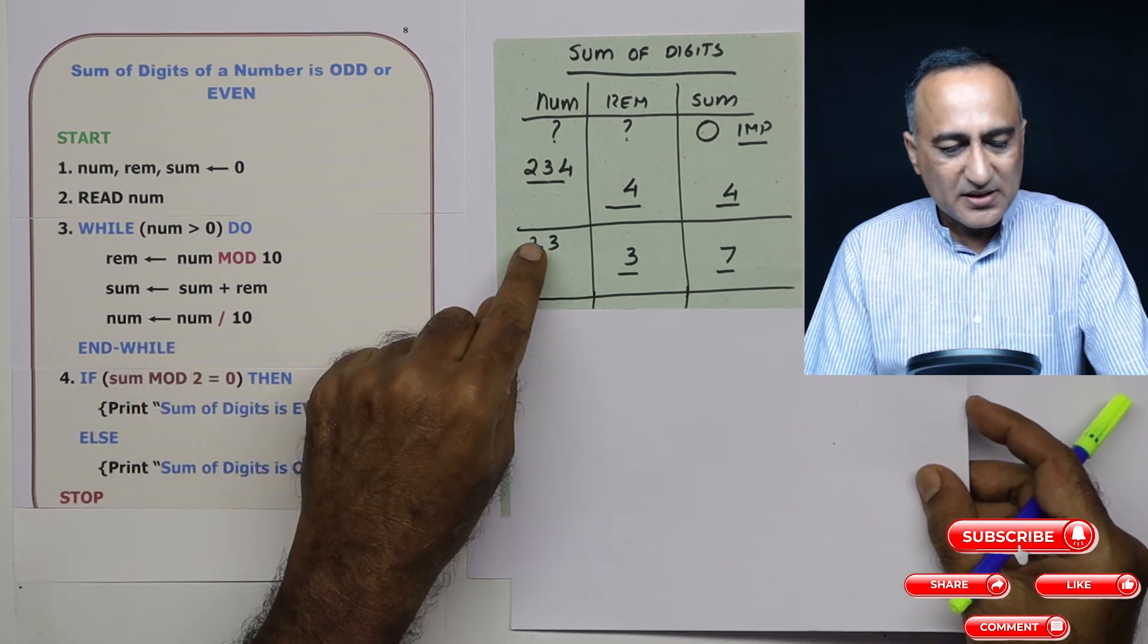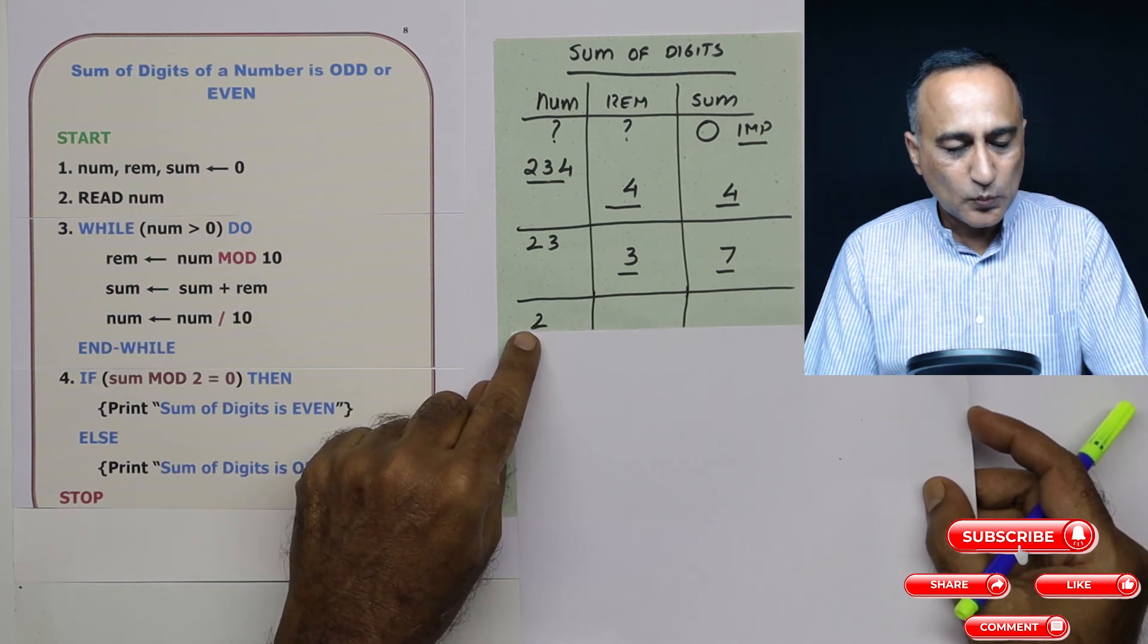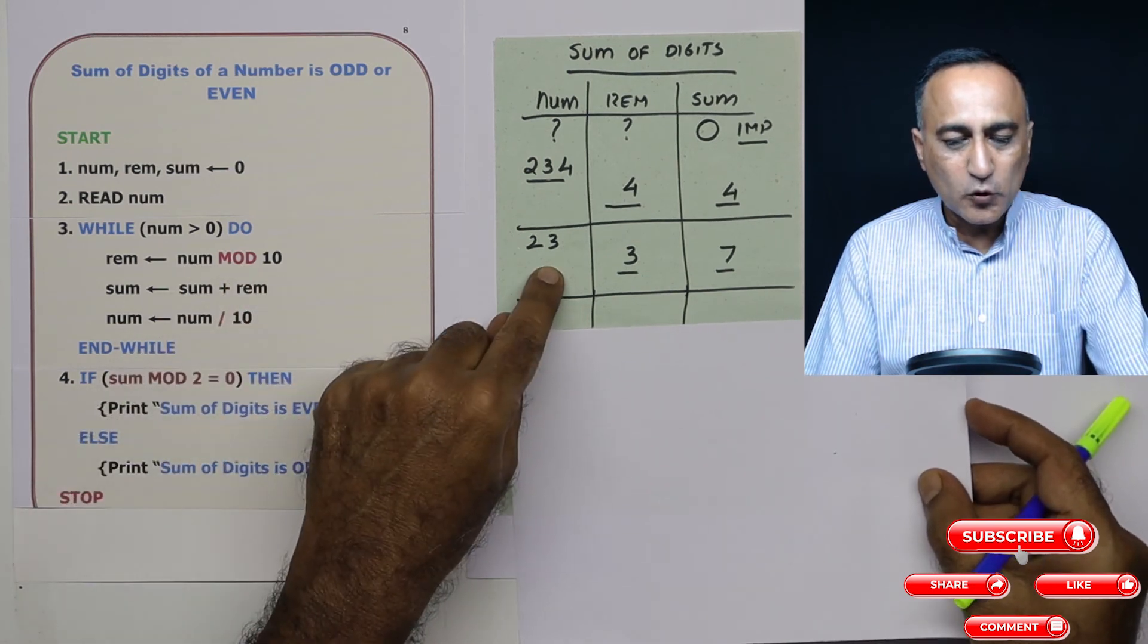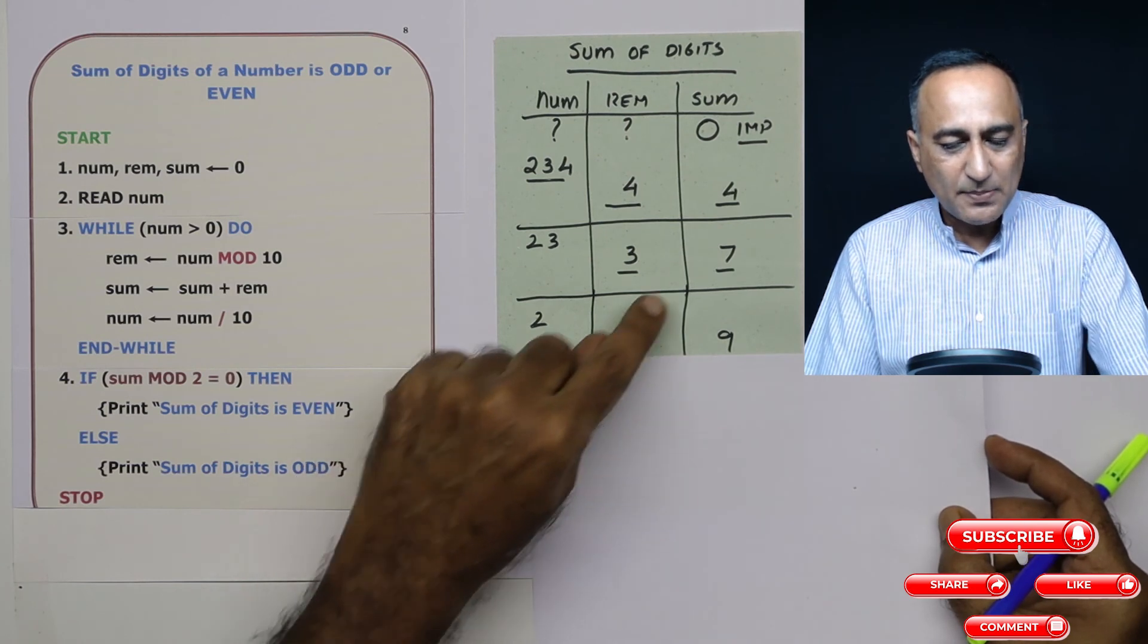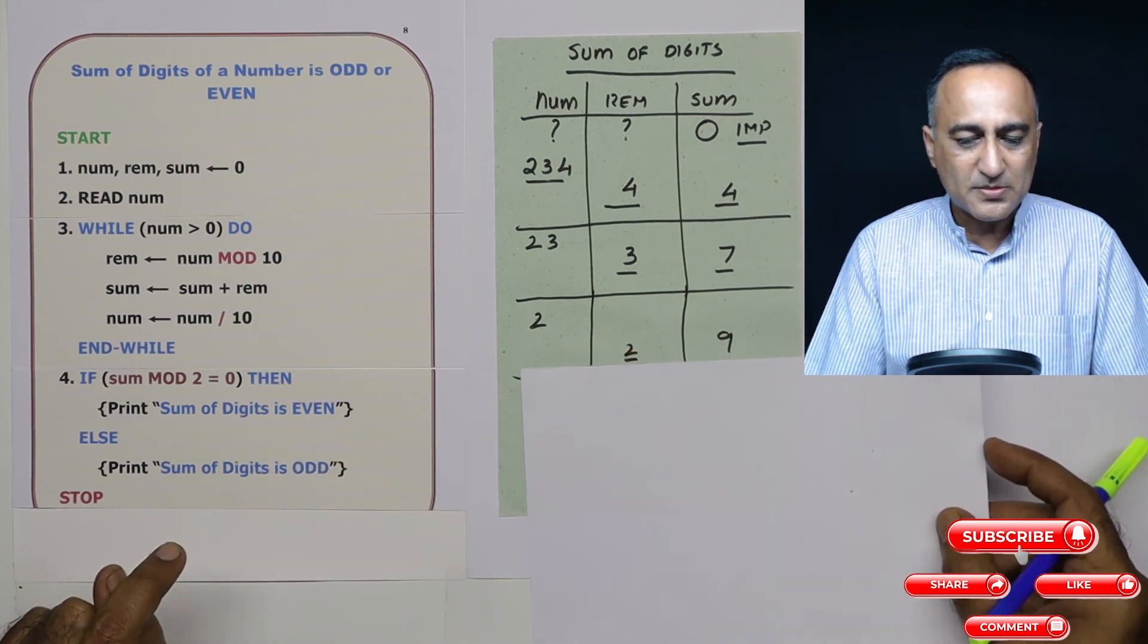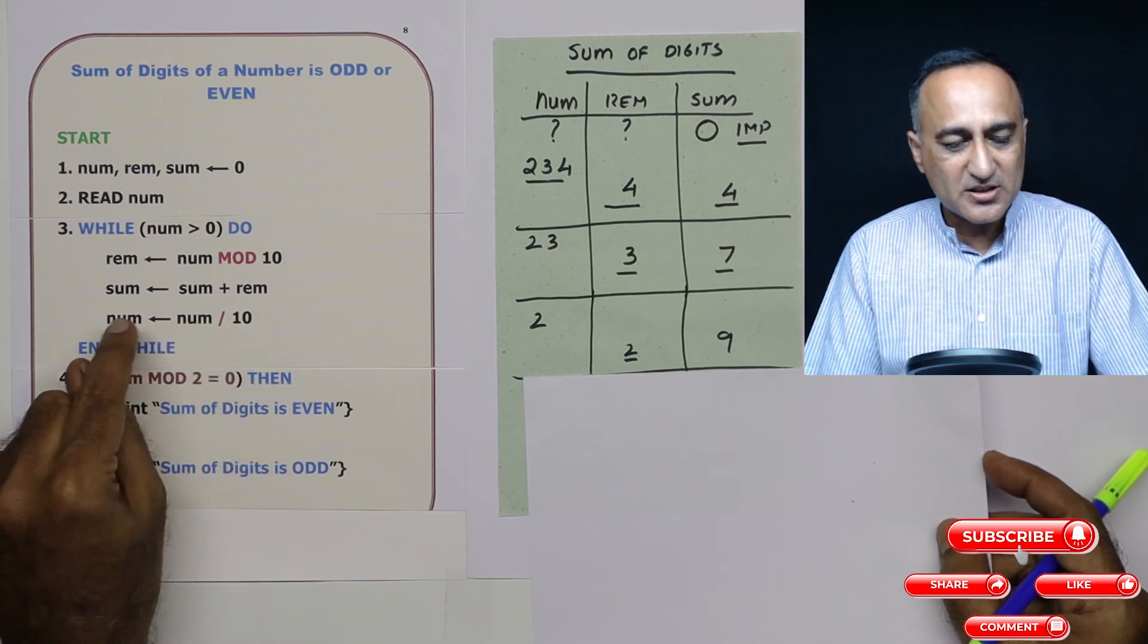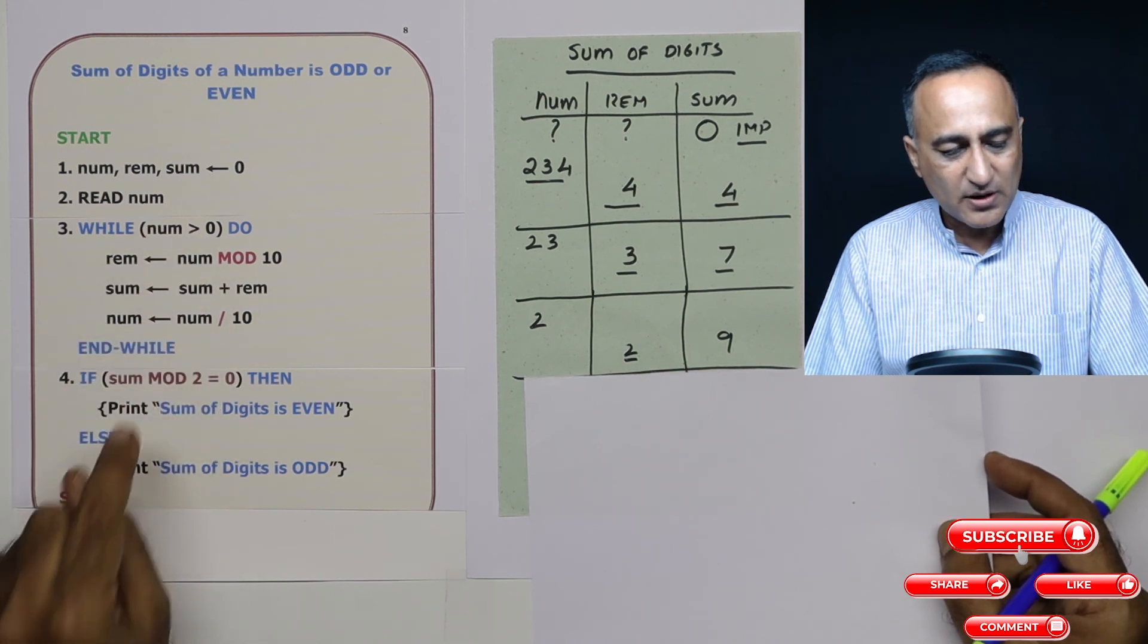Now number is 23 divided by 10, so number just becomes two. Two is greater than zero is still true. Two mod 10 is going to be two because two is not divisible by 10. Now the value of sum so far is seven, seven plus two is nine, so sum becomes nine. Now number is two, so two divided by 10, the quotient is zero, so number has now become zero. Is zero greater than zero? No. So I will come here.